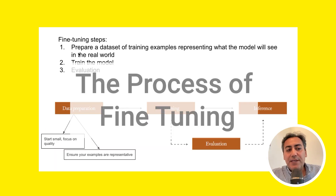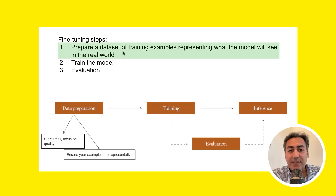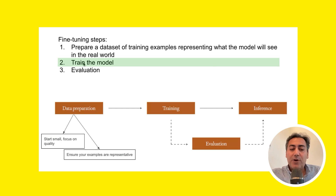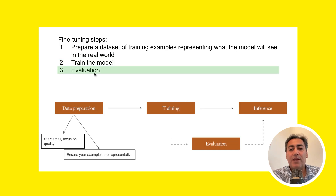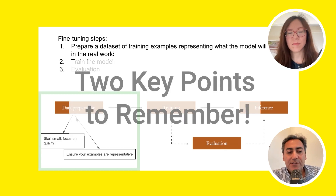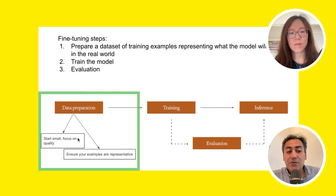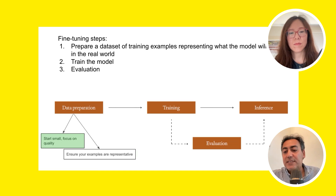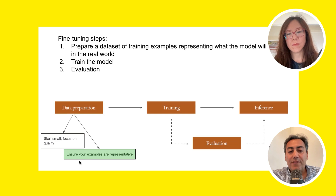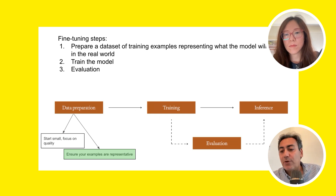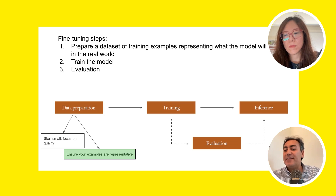If you want to do fine-tuning, there are three major steps. First, you need to prepare a dataset of training examples. The second step is to train the model — there are multiple frameworks for doing that. The third is evaluation: you have to evaluate the accuracy of the fine-tuned model on a held-out dataset. Always start with a very small dataset but focus on quality, because quality is extremely crucial. Also make sure your examples are representative of what the model will see in the real world.